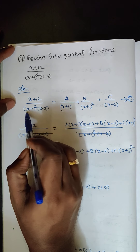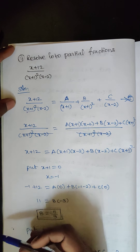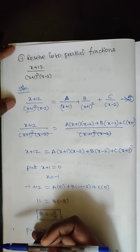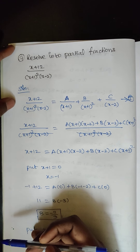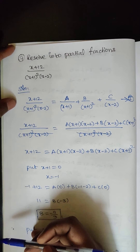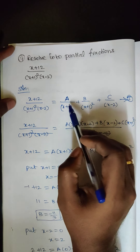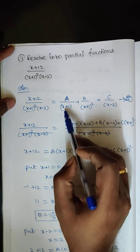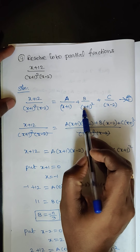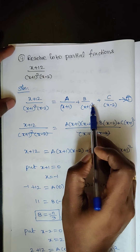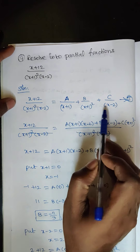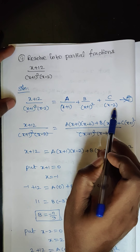Here x + 1 is repeated 2 times — the same factor appears 2 times repeated — so this is Type 2. We expand this as A/(x + 1) plus B/(x + 1)² plus C/(x − 2).